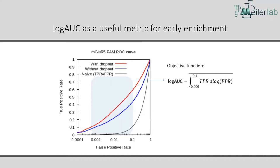The key metric we care about most is being able to predict active compounds early on with a very high score. Even if we miss many actives, we want to recover some at a very low false positive rate. The most common metric we use to assess the model is log AUC — an integral between a specified false positive rate of 0.001 and 0.1. It's very stable to small changes in the model, unlike enrichment which has a lot of noise.